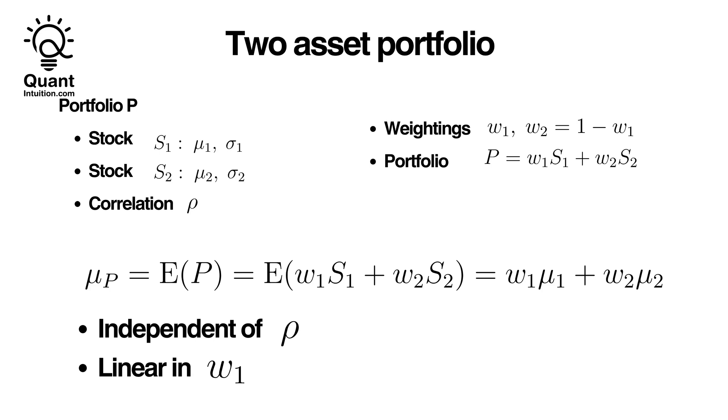When the portfolio is entirely composed of the first stock, meaning W1 is 1, then muP equals mu1. As we reduce W1, the portfolio's expected value shifts closer to mu2.